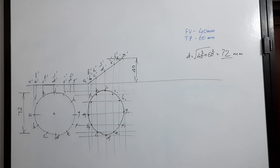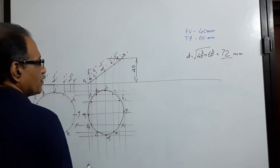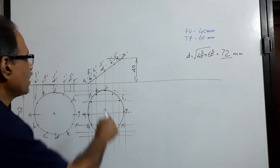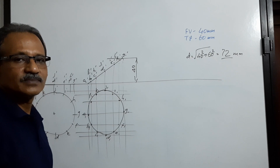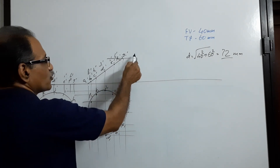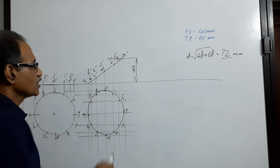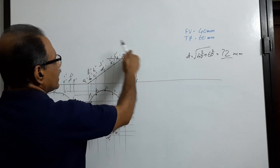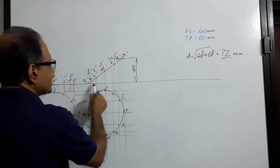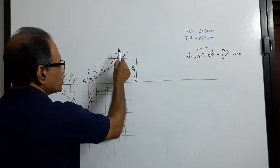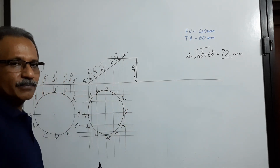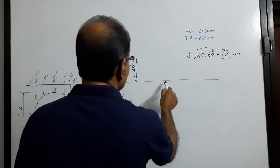If this dimension is 40, since the diameter is 72, that will make the other dimension 60. When this is 40, this will be 60. You can take 40 mm above and cut an arc and project a new plan, or take 60 mm away, draw a vertical projector, cut an arc, and project the plan. Now redraw this plan.